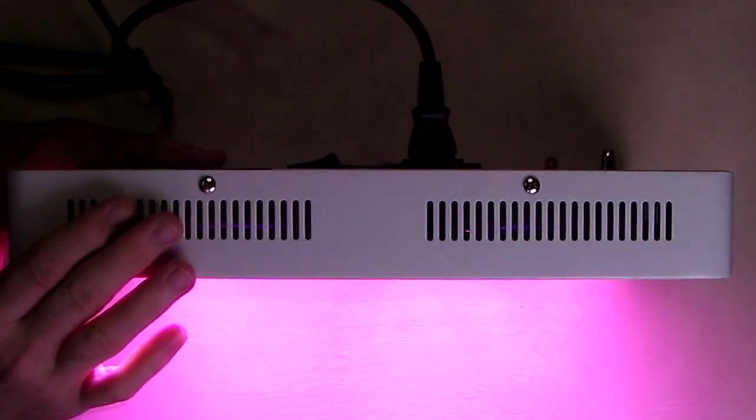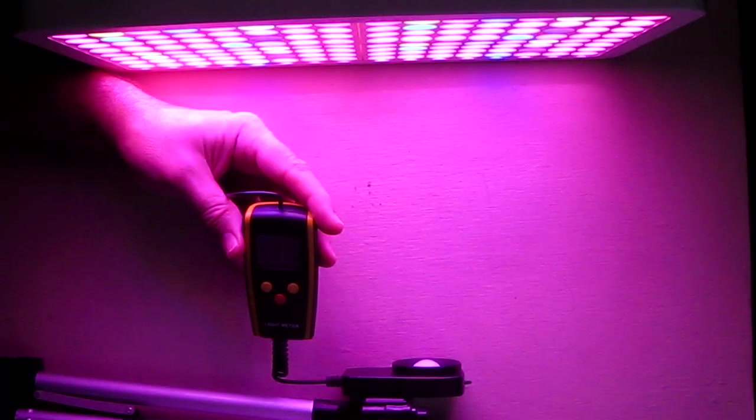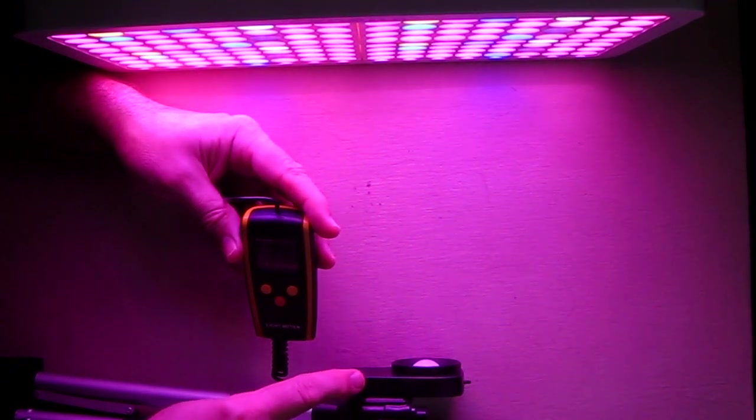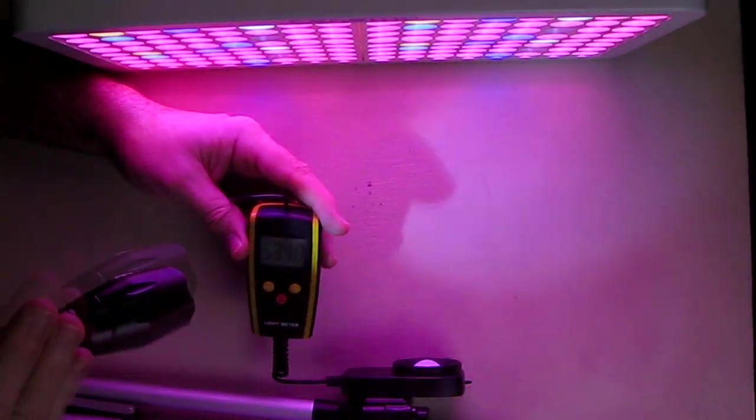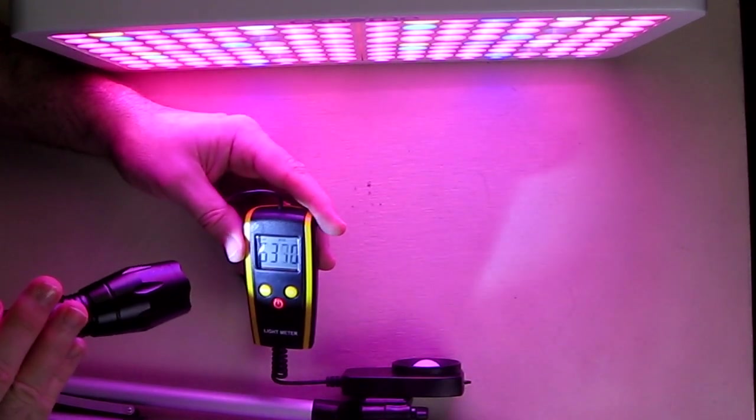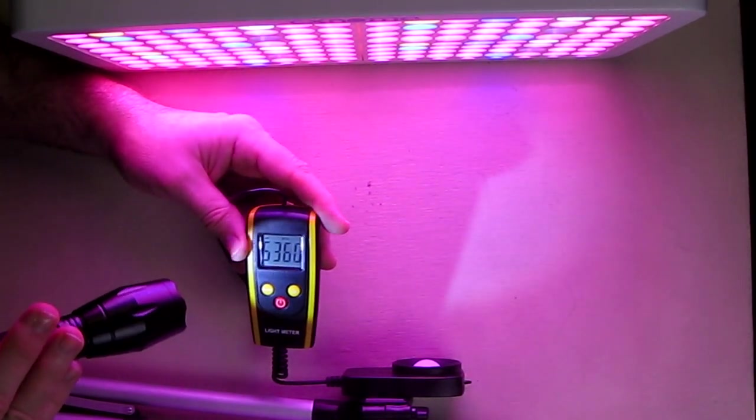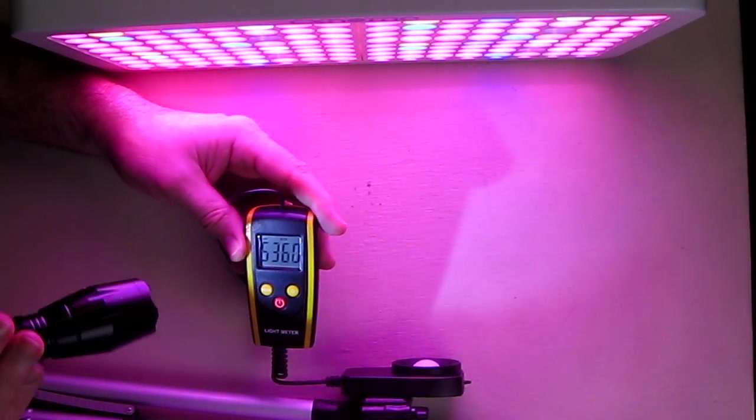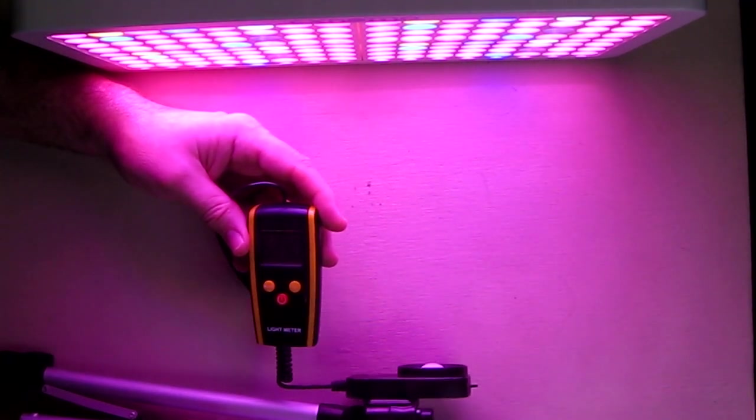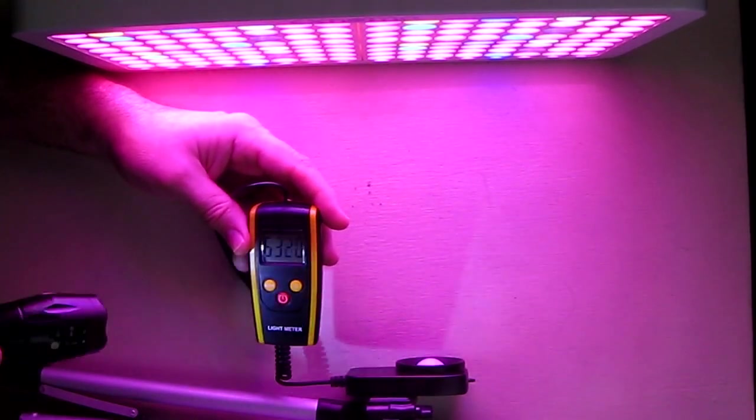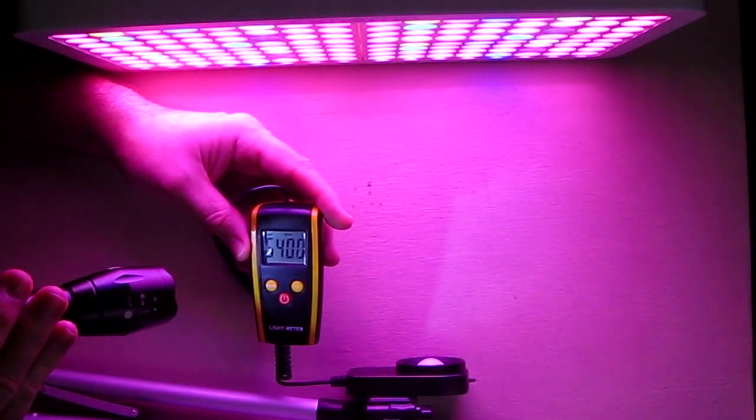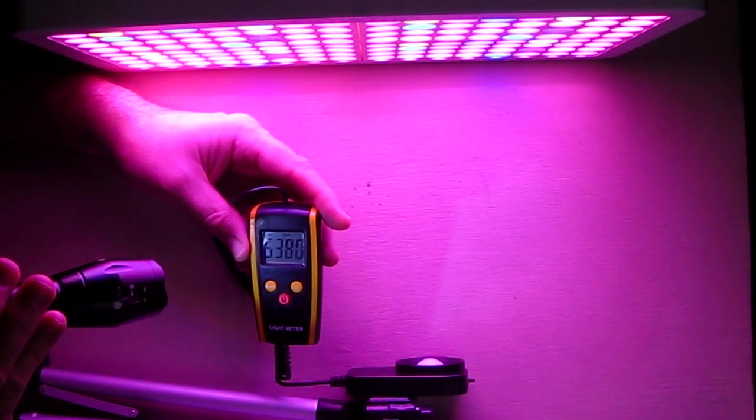I have a lux meter here measuring light output in lux. I'm at one foot away with the sensor and it's producing 50,350 lux. If I go to center it increases - 650, 900. At one foot away I'm getting almost 6,000 lux. This is producing a lot of light.